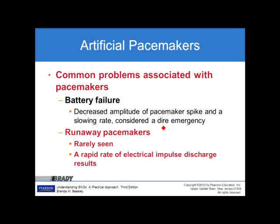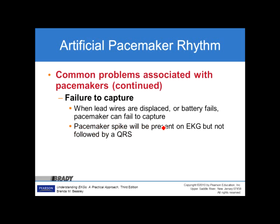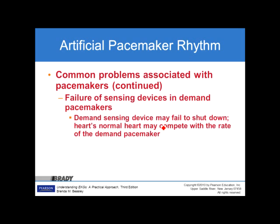Common problems associated with pacemakers include battery failure, which causes decreased amplitude of the pacemaker spike and a slowing rate — considered a dire emergency. Runaway pacemakers, rarely seen, involve a rapid rate of electrical impulse discharge. Failure to capture occurs when lead wires are displaced or the battery fails — a pacemaker spike will be present on the EKG but not followed by a QRS, or the heart doesn't have the ability to respond to it. Failure of sensing devices in demand pacemakers may cause them to fail to shut down, so the patient's normal heart rate may compete with the rate of the demand pacemaker.